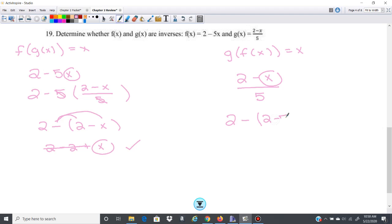2 minus 5x over 5. Okay, so then distribute this. So 2 minus 2 plus 5x over 5. So these 2s cancel, these 5s cancel, you're left with x, so these are inverses of each other.